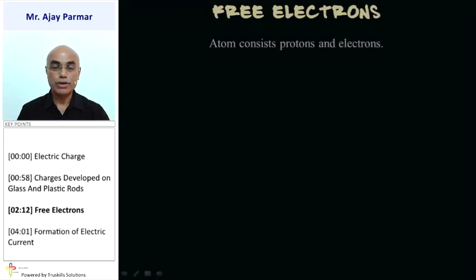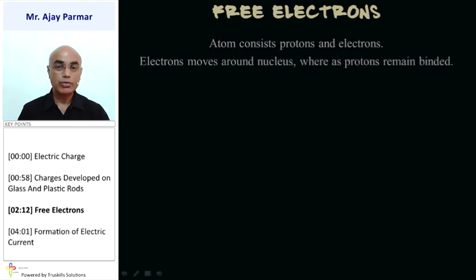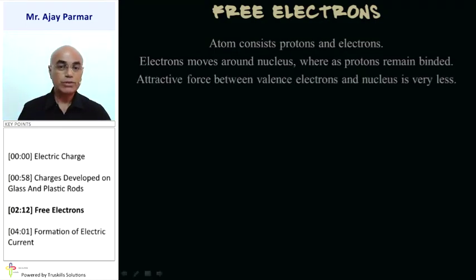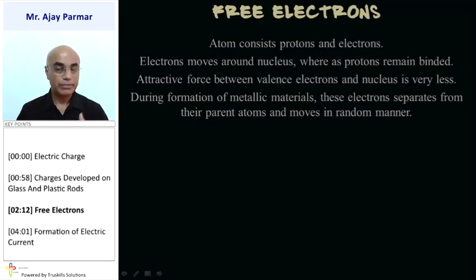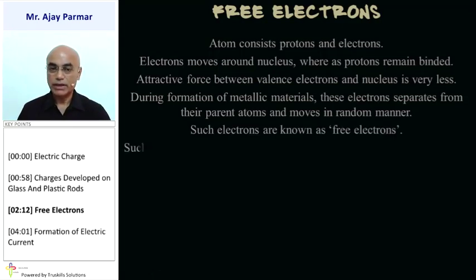An atom consists of protons in the nucleus, electrons surrounding the nucleus, and neutrons — but neutrons are not charged. Electrons move around the nucleus while protons are bound in the nucleus. There is always an attractive force between the valence electrons in the outermost orbit and the nucleus, but that force of attraction is very negligible. During the formation of metallic materials, these electrons separate from their parent atom and move randomly, jumping from one atom to another — such electrons are called free electrons.